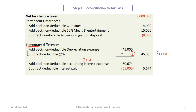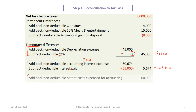The next temporary differences relate to interest expense on the bond. The interest is calculated using the effective rate approach, so for accounting purposes the effective interest rate is sixty thousand six hundred and seventy-four dollars — we add that back. But we can deduct the actual interest paid of fifty-five thousand dollars, subtracting that and giving us a net of five thousand six hundred and seventy-four. This would also be the actual amortization of the bond discount for the second year.